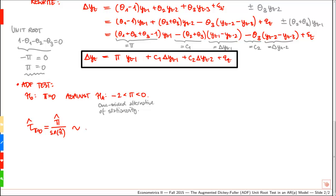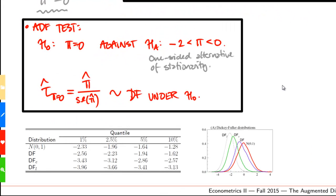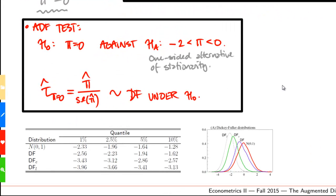Under the null, this follows a Dickey-Fuller distribution. Here we have a small plot of the Dickey-Fuller distribution, the blue distribution. Note that compared to the standard normal distribution, it's moved a bit to the left. Also note that if we include a constant term or trend in the model, that would change the Dickey-Fuller distribution and move it more to the left.